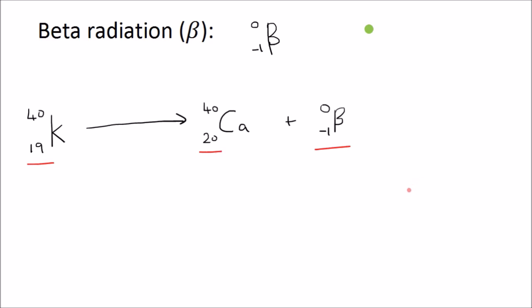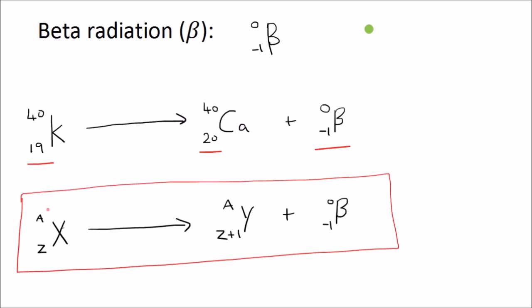This is the general formula for beta radiation. Any element X with mass number A and atomic number Z will decay by beta emission into another element Y. The mass number stays unchanged, but the atomic number increases by 1, therefore making it a different element, and the beta particle is given off. You'll notice both sides of the equation balance. Here you have Z for the atomic number. On the other side you have Z plus 1 and minus 1, so they cancel each other out and Z equals Z. If you can remember this general formula for beta emission, you'll be able to do any equation with any element that emits a beta particle.